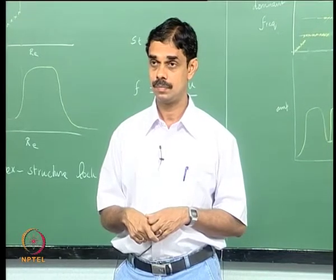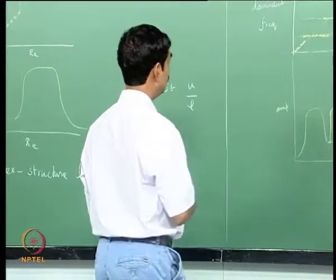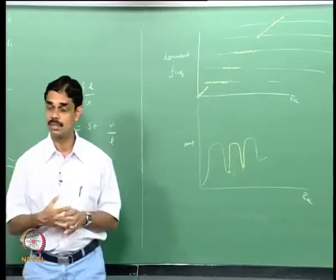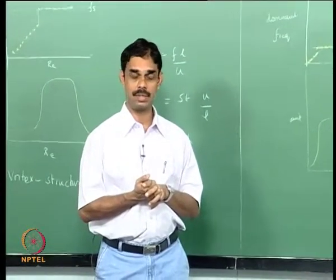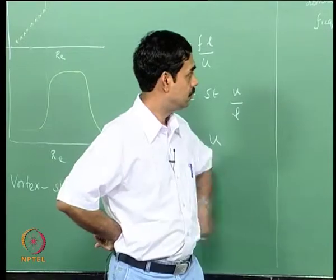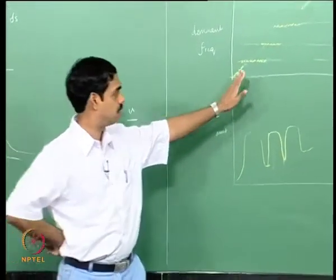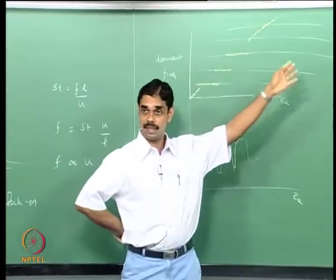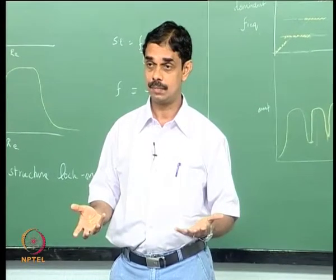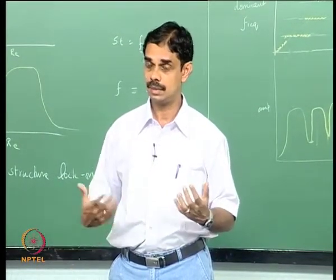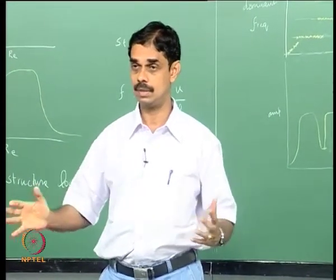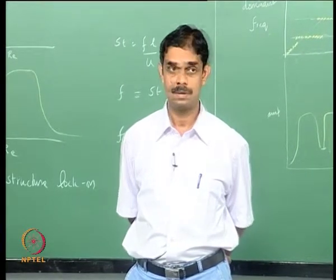Beyond some range this locks in and beyond that it does not occur. Precisely how many modes it will lock on to is hard to tell — in our experiments we have managed to lock on to the 8th, 9th, and 10th modes. On the lower side there may be no acoustic mode to lock into, and above some point the damping is too high — the vortex provides driving but it may not be sufficient to build up amplitude because the acoustic damping of those higher modes is very high. Precisely how many modes can lock on depends on the actual case, but in general this is what happens.